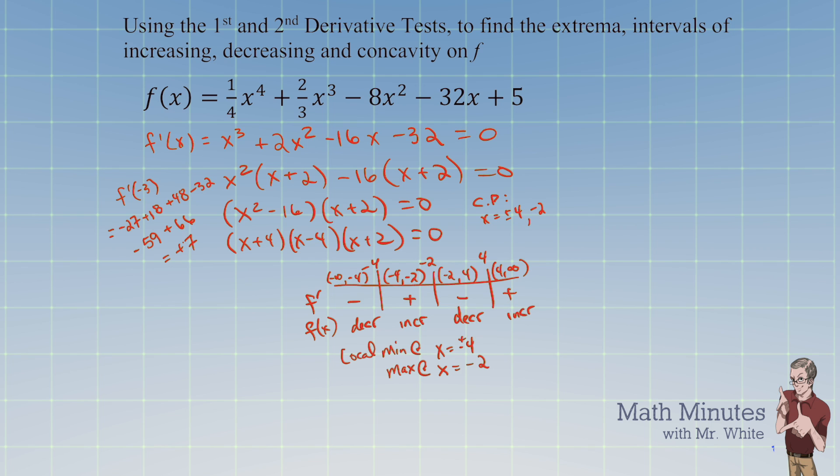At this point, you're ready to do the second derivative. I'm going to give myself a little bit of extra room here. So let's do the second derivative. I'm looking right up here, and I'm going down here, and I'm going to do the second derivative. So 3x squared plus 4x minus 16.